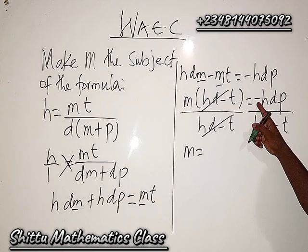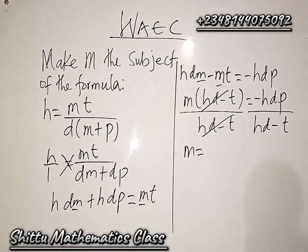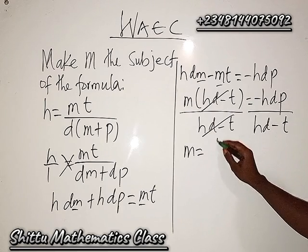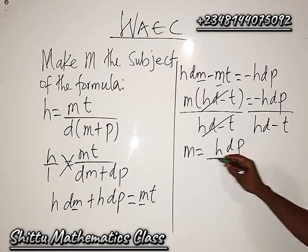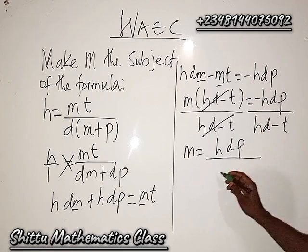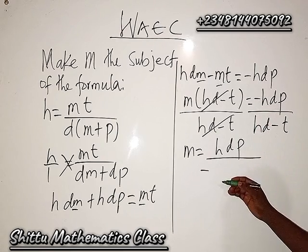Now here I have this minus here and I don't want to see the minus. What can I do? You know that h·dp, I can bring this minus down here, it doesn't change anything over h·d minus t.